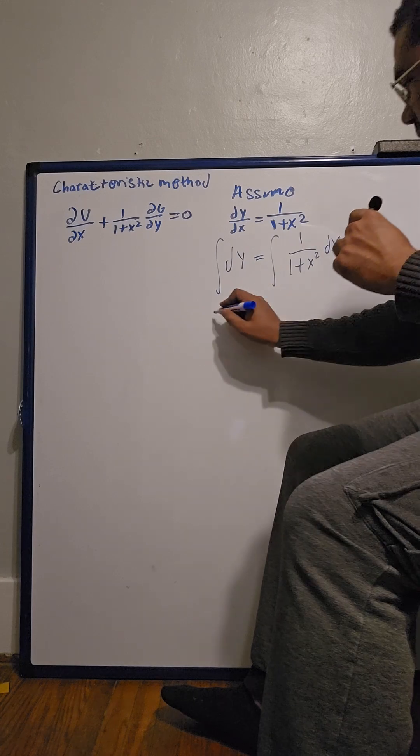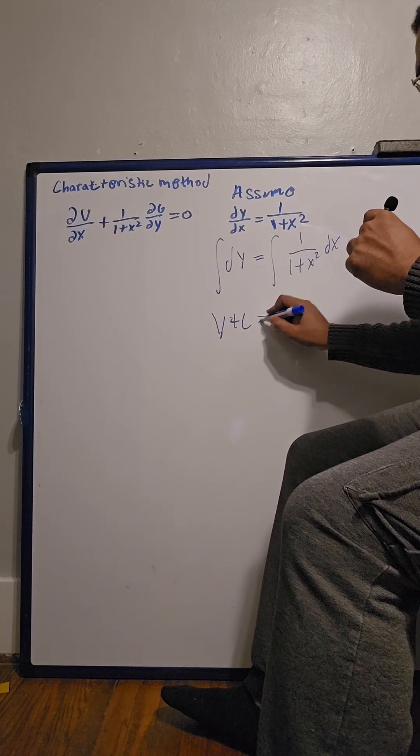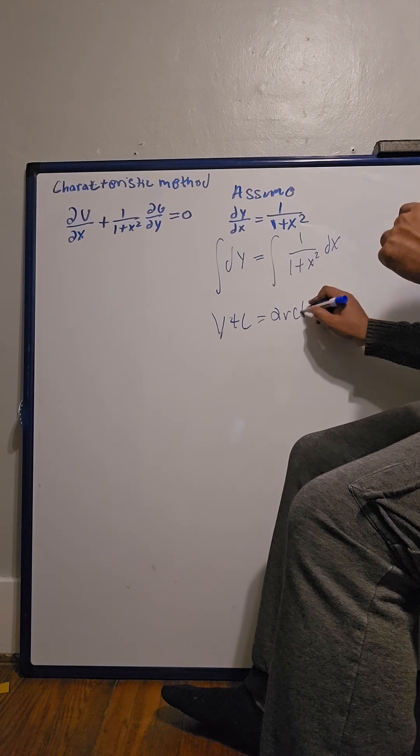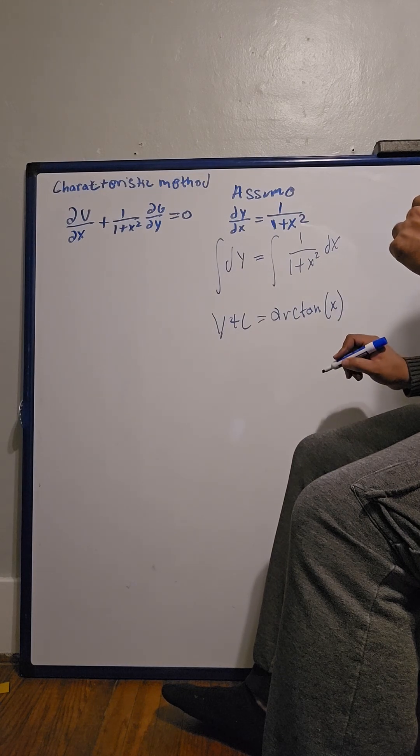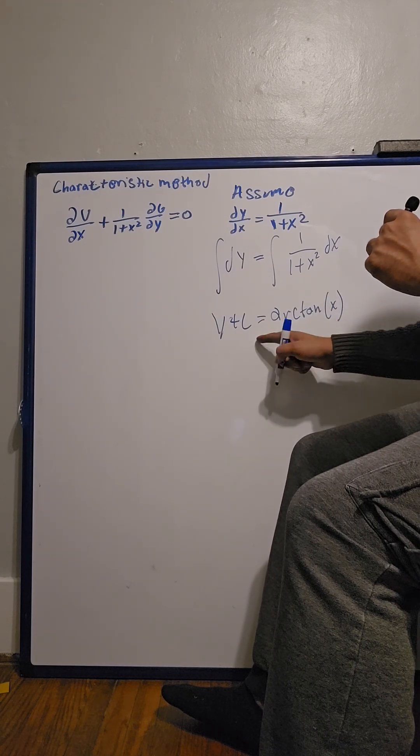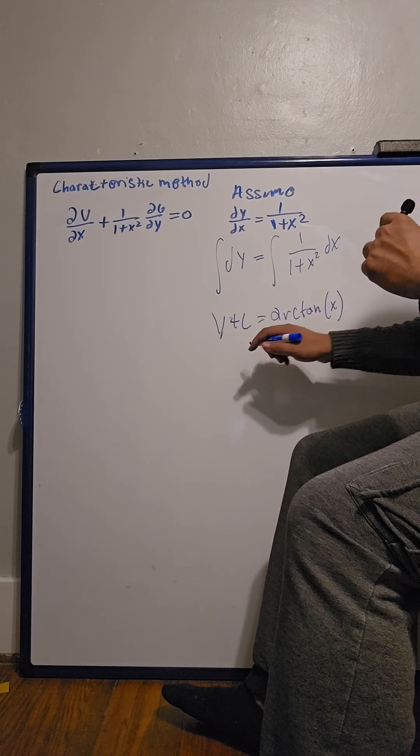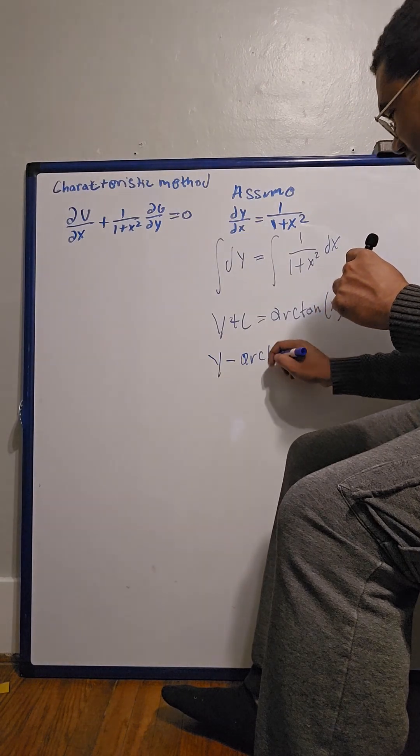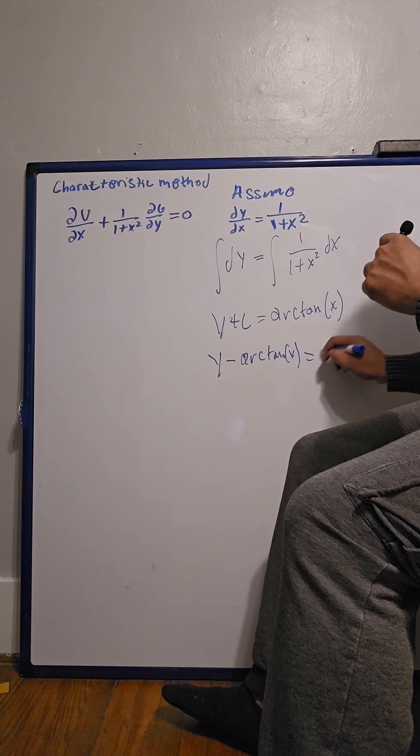Taking the integral we get y plus c equals arc tan x. Now solving for c because this is a characteristic curve along a constant, we get y minus arc tan x equals c.